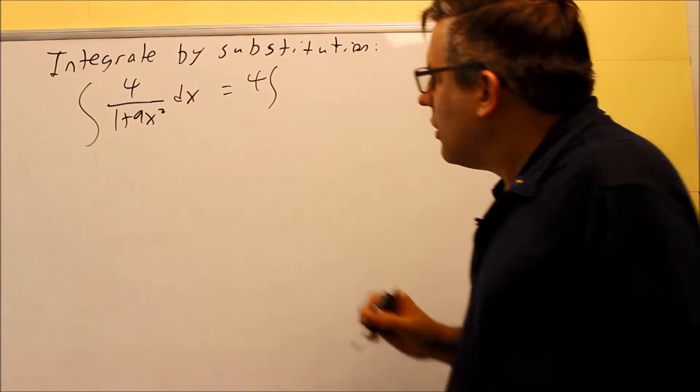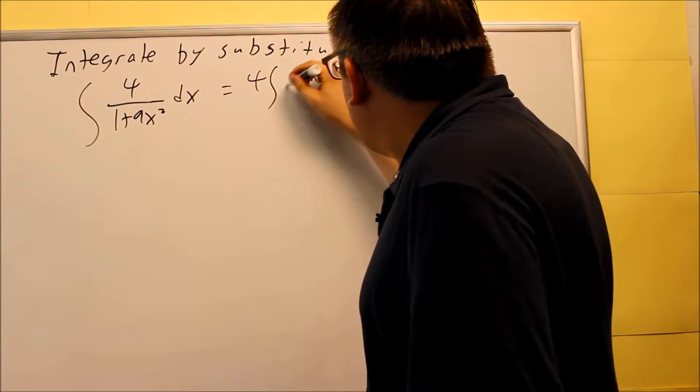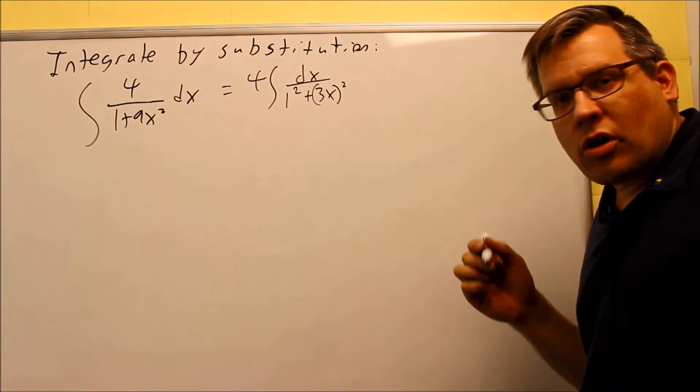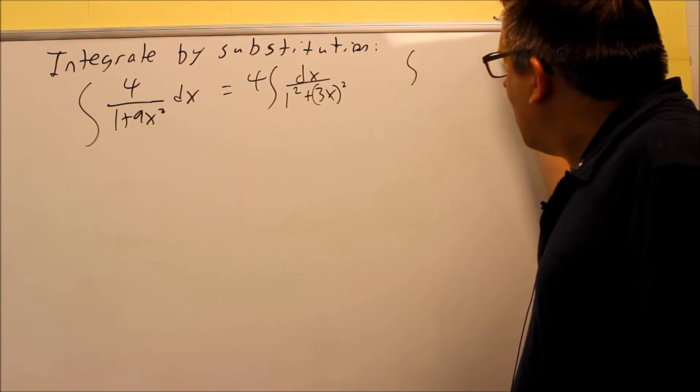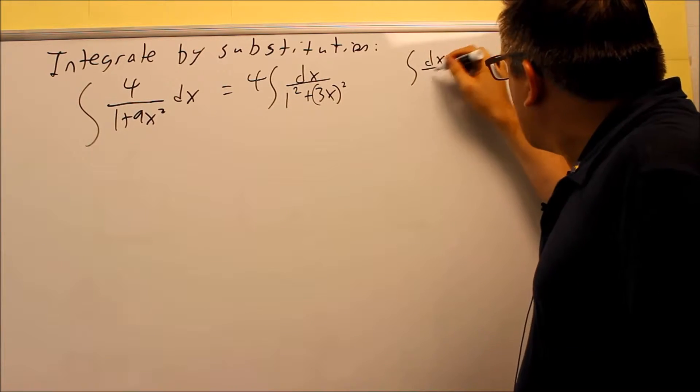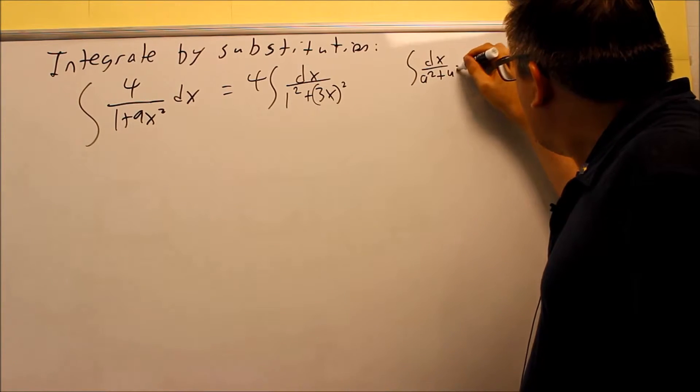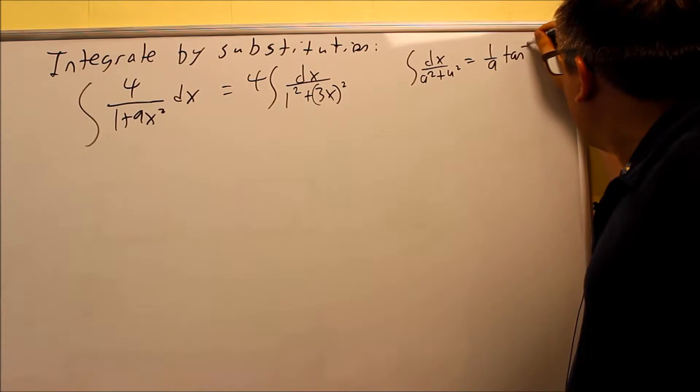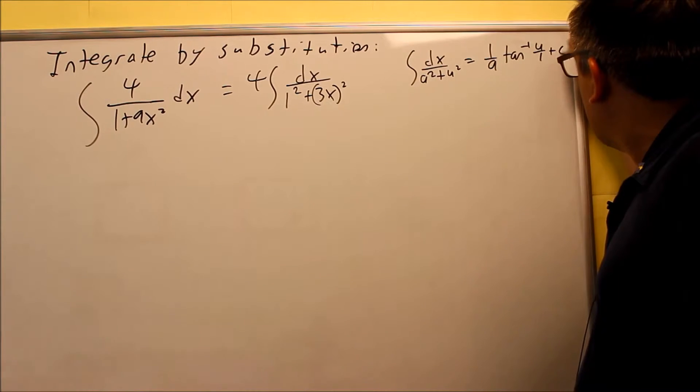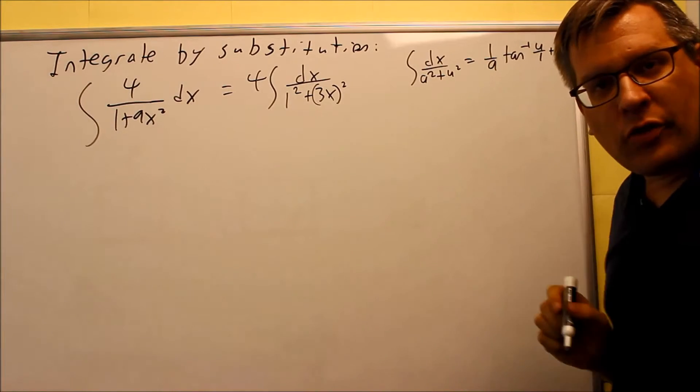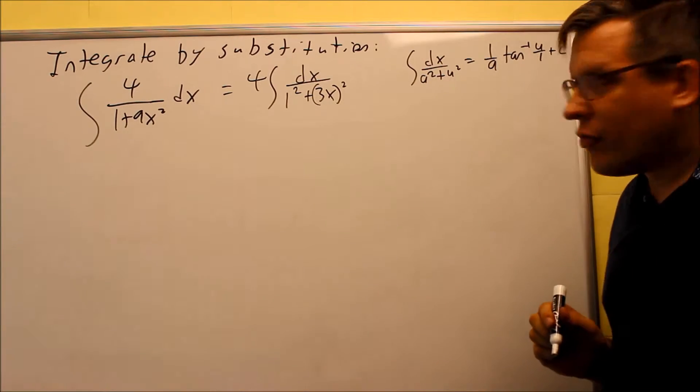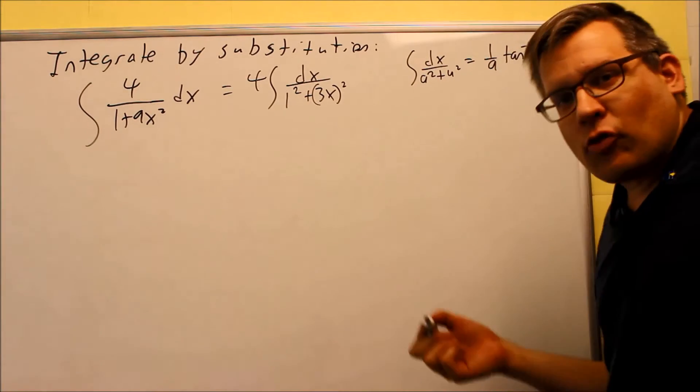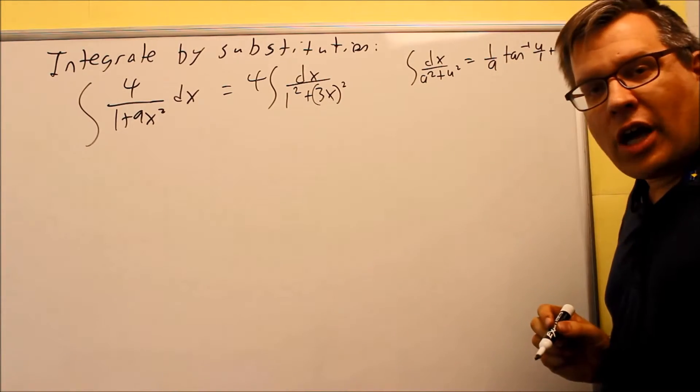So, I'm going to rewrite this, I'm going to put the 4 on the outside, and then I'm going to put the dx here and down below, I'm going to write these as squares. So recall that if you have the derivative of dx over a squared plus u squared, this is equal to 1 over a inverse tan of u over a plus c. So that was from a previous chapter. We talked about the inverse trig functions. So this is the actual formula that we're going to use.